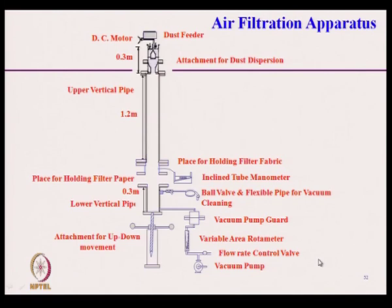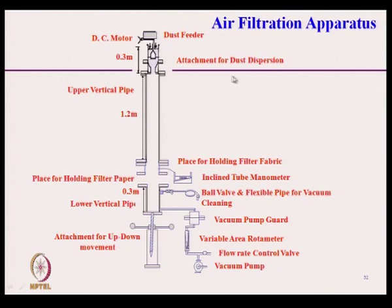In the equipment schematic, a DC motor is connected with the dust feeder, which feeds dust at a predetermined rate. A dust dispersion attachment is responsible for dispersing and mixing the dust with air. The vertical pipe, which is 1.2 meters in length, channels the dusty air through the system.